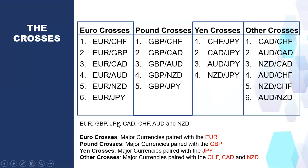After euro, pound, and yen crosses, what's remaining gives us the CAD crosses — pairing CAD with CHF, AUD, and NZD — then CHF crosses with the remaining two, and finally AUD/NZD. In total there are 21 cross pairs.